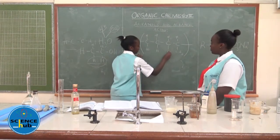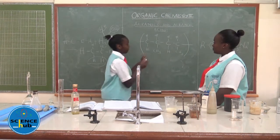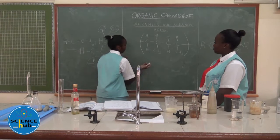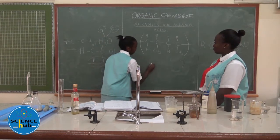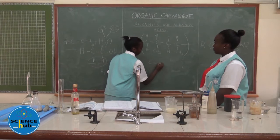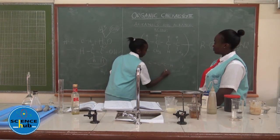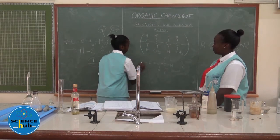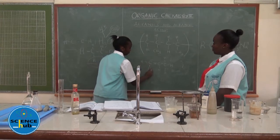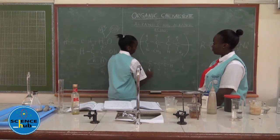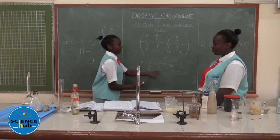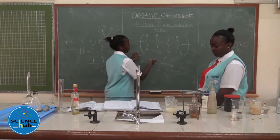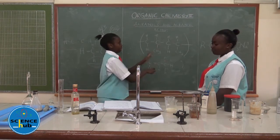The repeating unit should show H and CH3. Polypropene is formed by combining units of propene. The structure of propene is CH2=CH-CH3. Two or more of them combine to form polypropene.